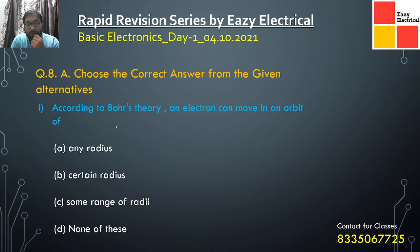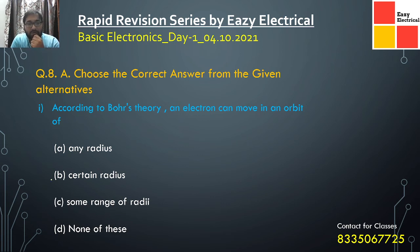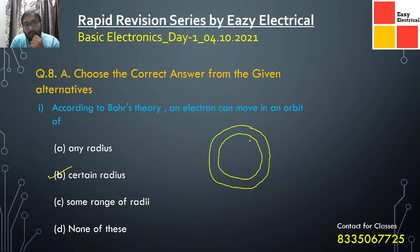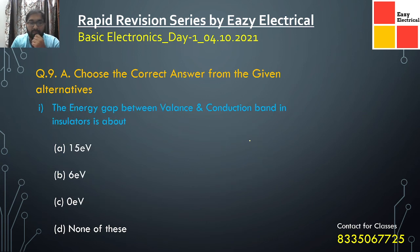According to Bohr's theory, an electron can move in an orbit of a certain radius. From the very basics of Bohr's theory, electrons move in a particular orbit, which means a particular radius, and that particular radius corresponds to a particular energy level as described in his theory.